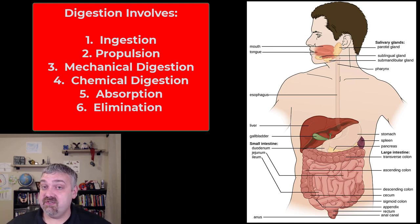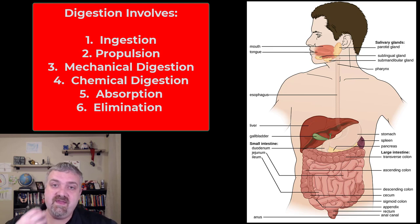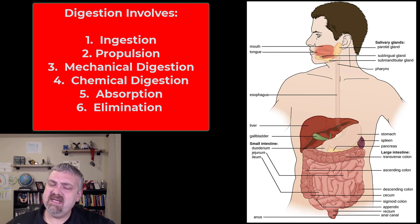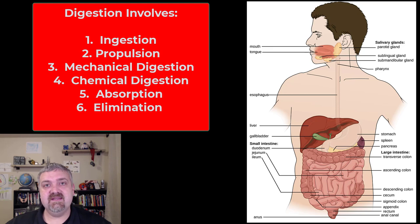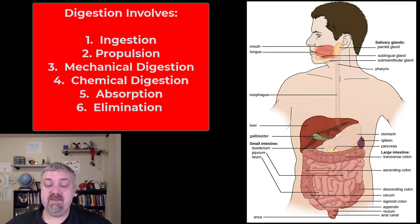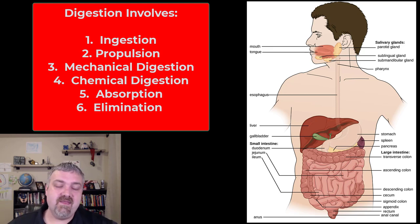Then we have mechanical digestion — the mixing, churning, and breaking down of food, whether that's your teeth grinding it, your tongue mashing it, or your stomach churning it up. Then we have the really important stuff: chemical digestion. The huge majority of that occurs in your small intestine, specifically the jejunum. The small intestine uses enzymes to break food down — breaking starch from pasta down to individual glucoses, breaking the protein in steak down to individual amino acids, or breaking down fats. This is the critically important step, because if you don't chemically digest your food into these small subunits, they can't be absorbed. Then we go into absorption, and whatever can't be absorbed — like fiber and other things — would be defecated.